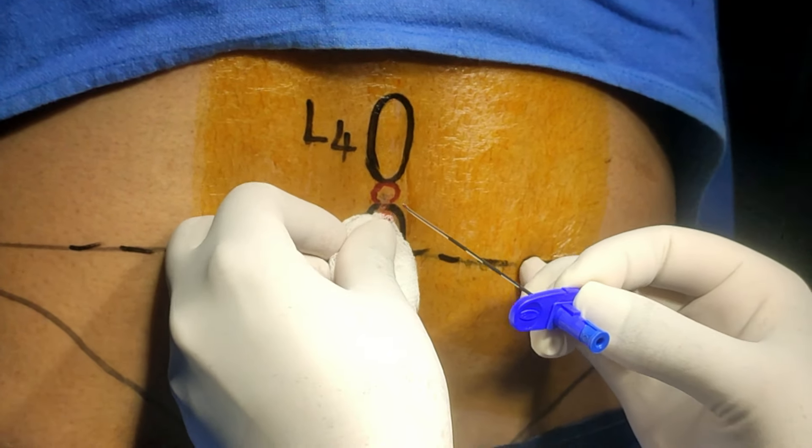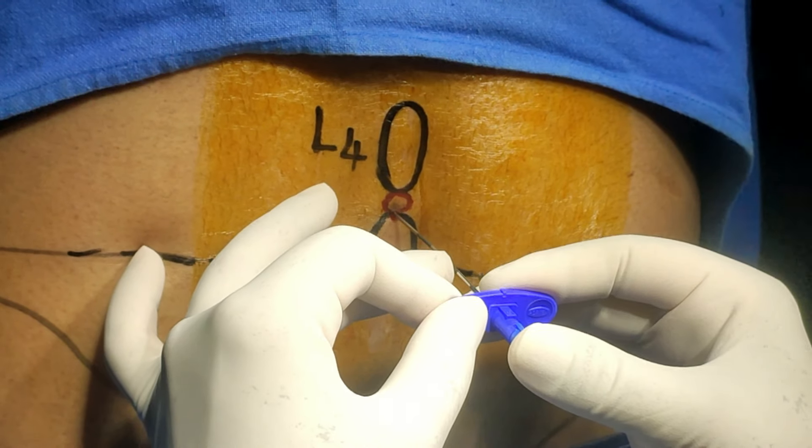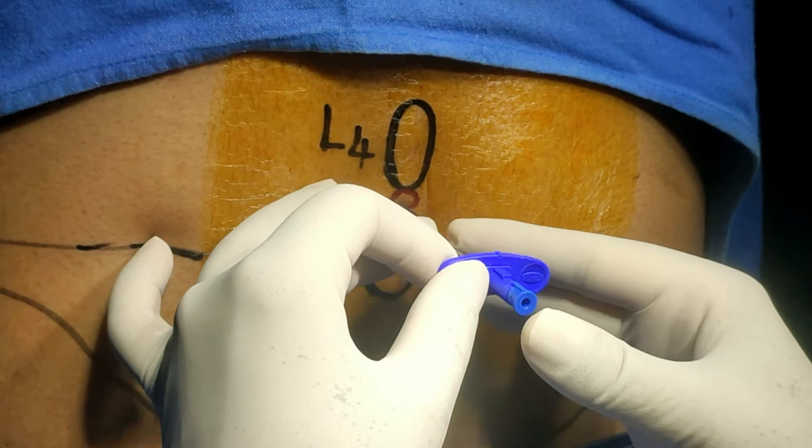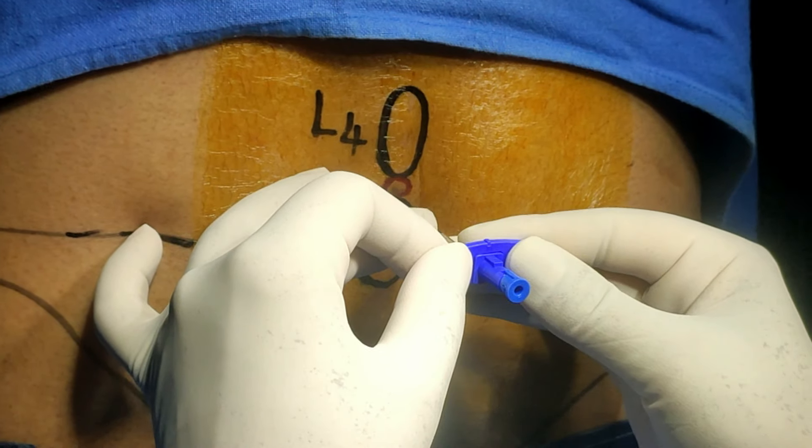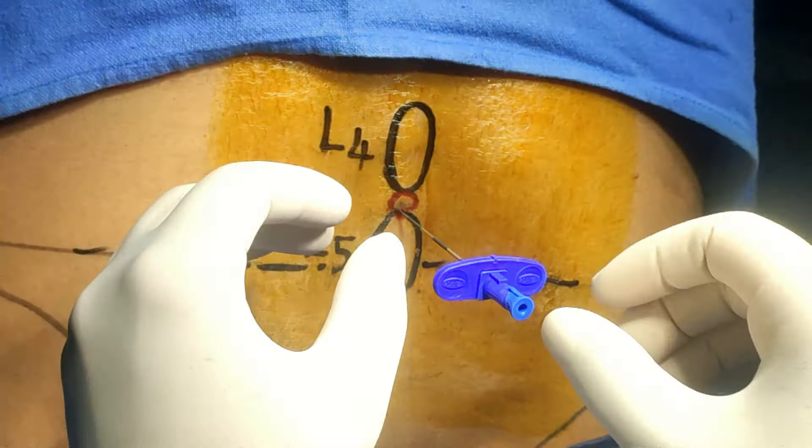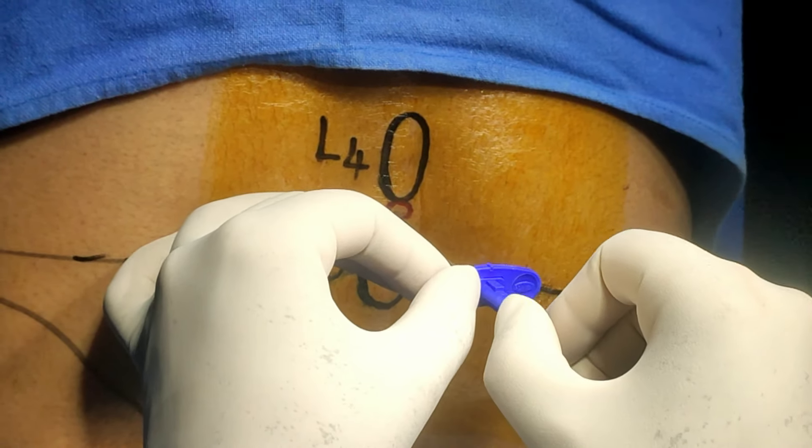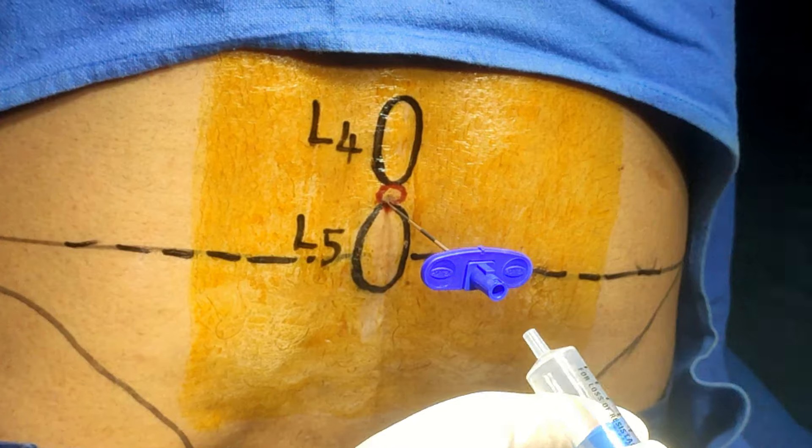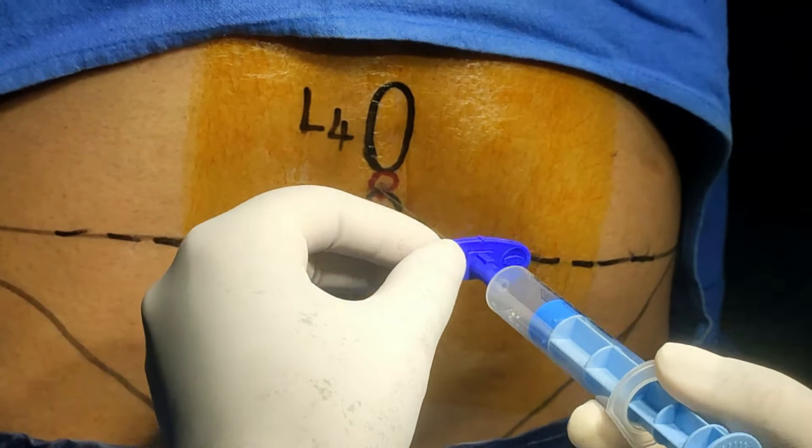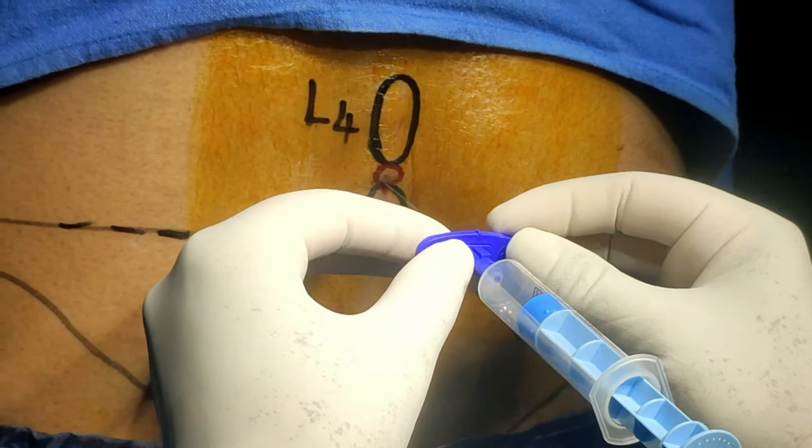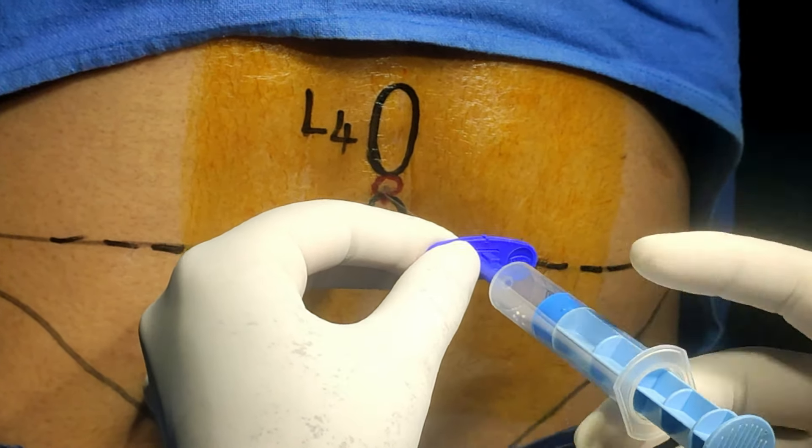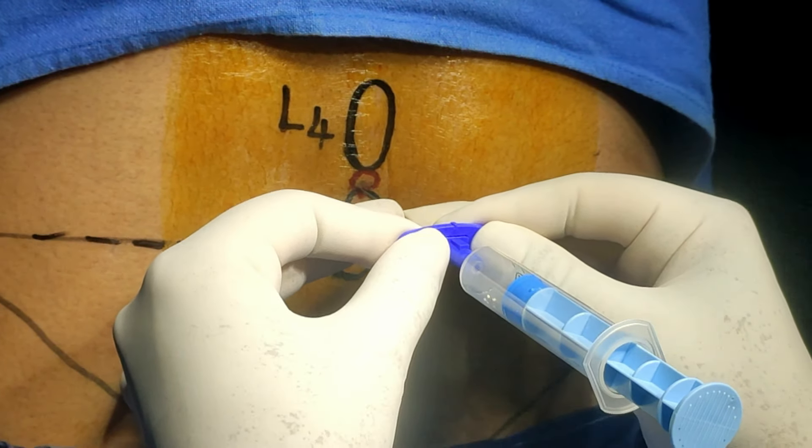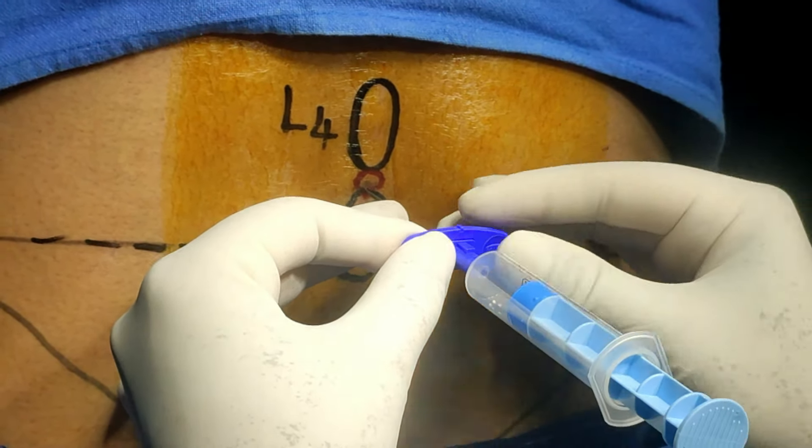From this point, insert it carefully. Yes, it has gone inside. Now remove the stylette. This is loss of resistance. Attach the syringe here and see the resistance is there. Gradually move it inside and check the resistance.